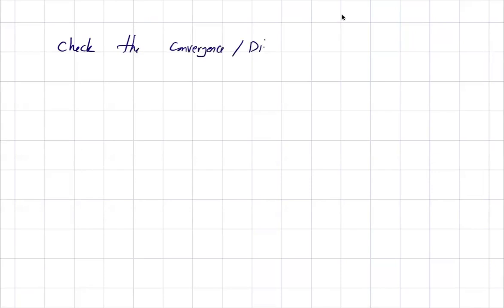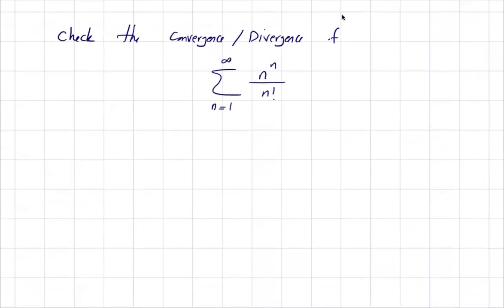We want to check the convergence or divergence of the following series. The series we have is the summation of n to the power n divided by n factorial, where n starts from 1 and goes to infinity.